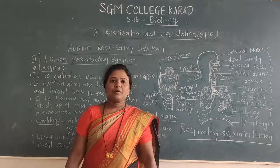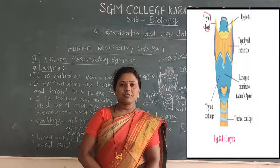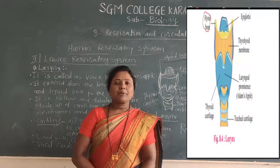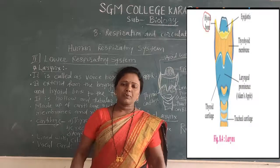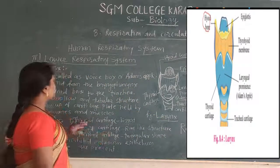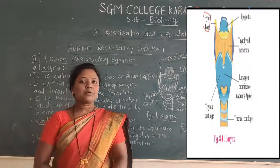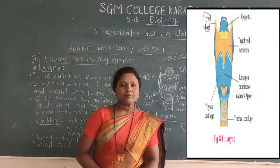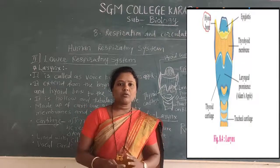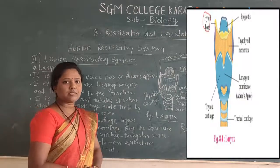Hello everyone. In last lecture, we started the human respiratory system and completed the upper respiratory system. Today we are continuing with another part, that is the lower respiratory system. The lower respiratory system consists of larynx, trachea, bronchi, bronchioles, and the lungs. These four parts will be discussed in today's lecture.